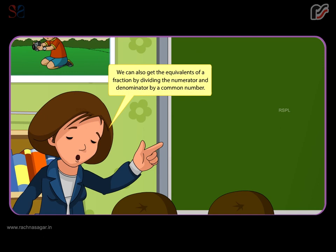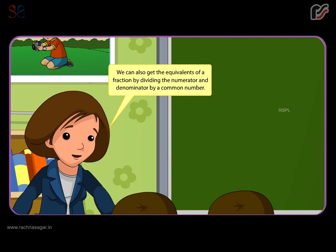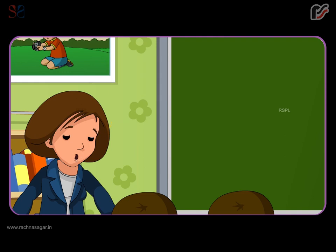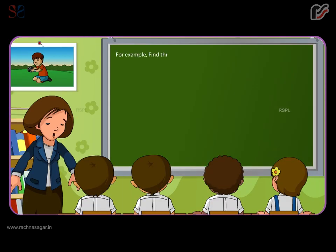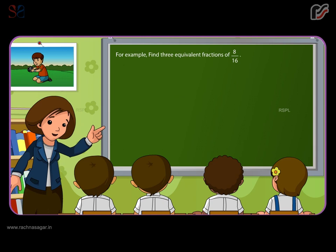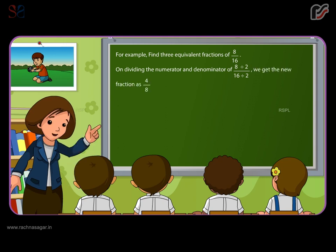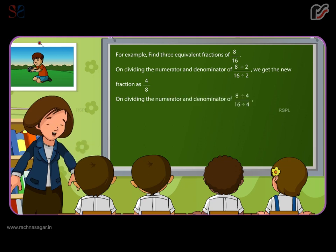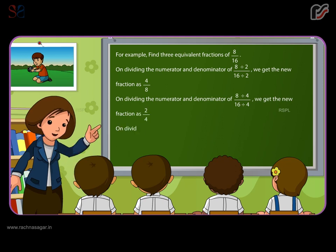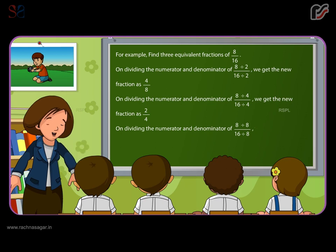We also get the equivalent of a fraction by dividing the numerator and denominator by a common number. For example, find three equivalent fractions of eight by sixteen. Dividing by two gives four by eight; dividing by four gives two by four; dividing by eight gives one by two.